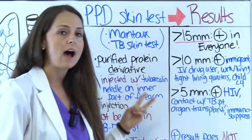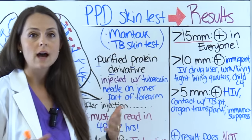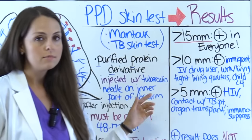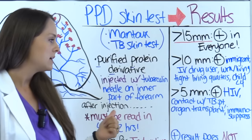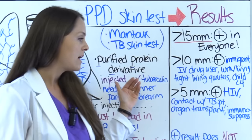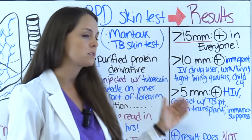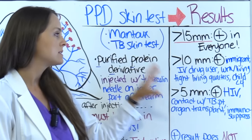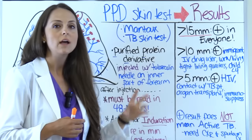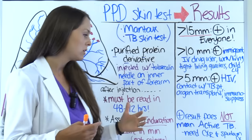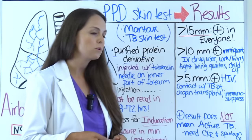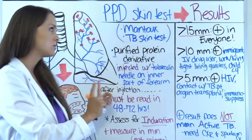10mm or more is positive in immigrants, IV drug users, people living in tight-quarter settings, and children under four. 5mm or more is positive in people with HIV, those in contact with active TB cases, organ transplant recipients, or those on immunosuppressant drugs. Remember, a positive result doesn't confirm active TB — it could be latent or active. A chest x-ray and sputum culture are needed to differentiate.